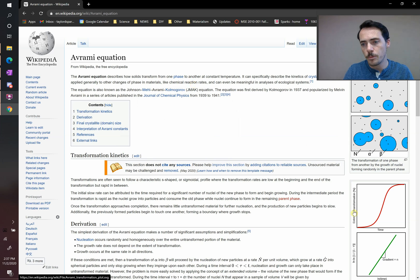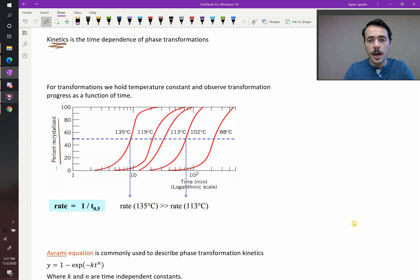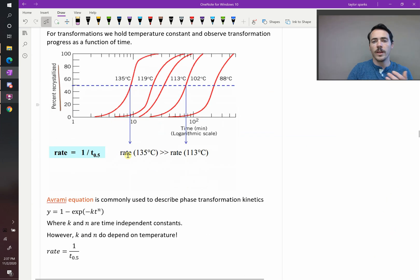And all it is, it's a mathematical expression that basically looks like this S-shaped curve right there, which happens to look a lot like real data. When real materials transform from one phase to another, they typically have this sort of S-shaped curve, and that's what we're seeing here. So that's the only reason we do this, is that mathematically it looks kind of like what we observe in nature.